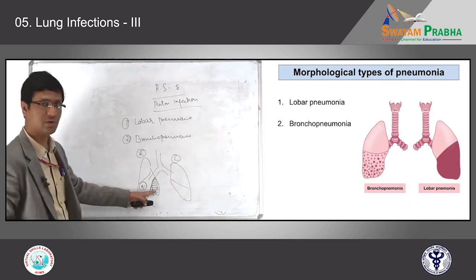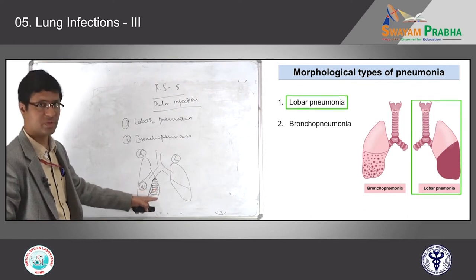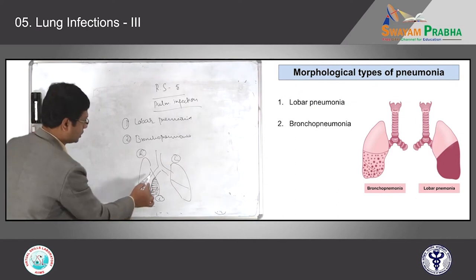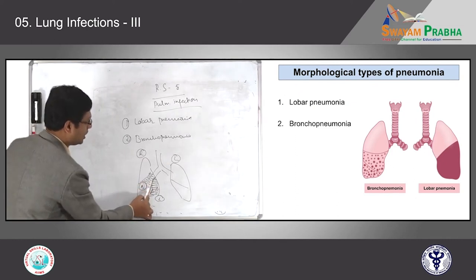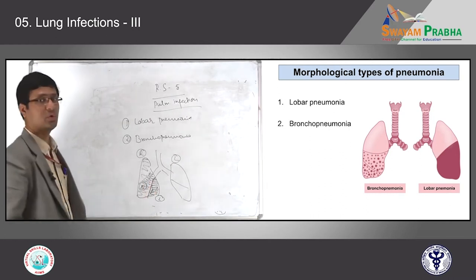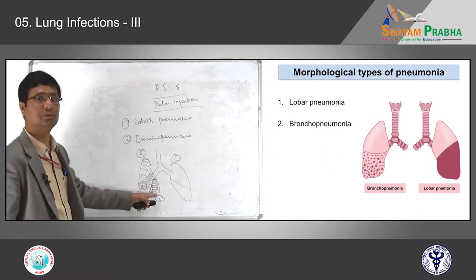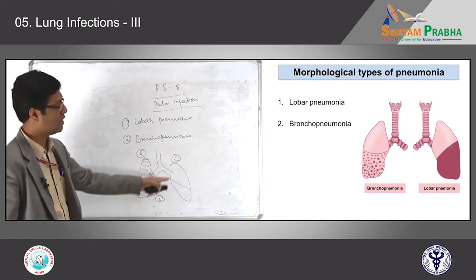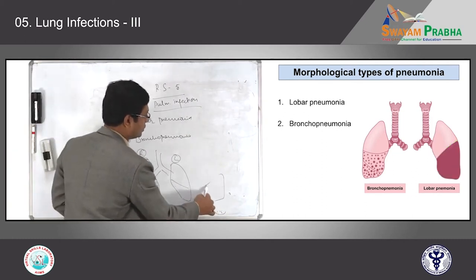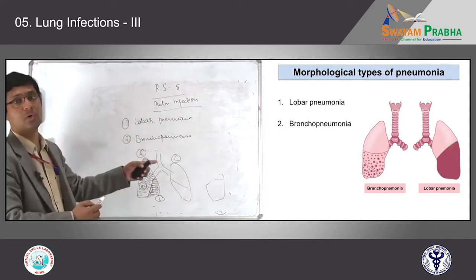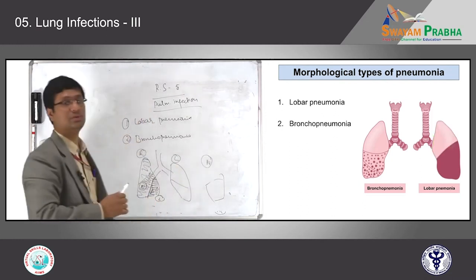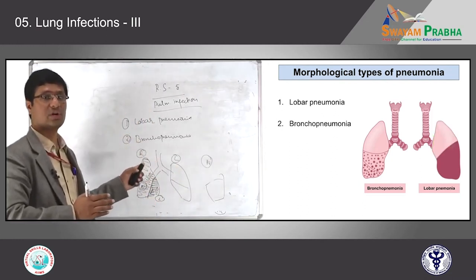When you see this kind of morphology, we call it lobar pneumonia. It doesn't mean only one lobe has to be affected — it can be two lobes also, both lower lobes, or the whole lung. In the picture, the pink color you see on the left side shows the whole lower lobe is affected, but the upper lobe is unaffected and perfectly normal.